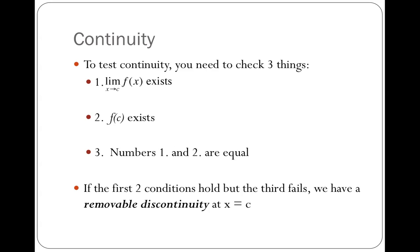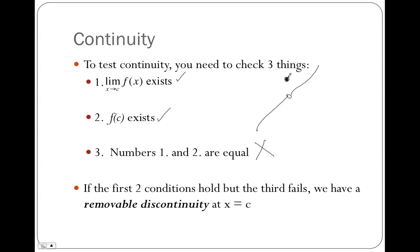If the first two conditions hold but the third fails, then we have what's called a removable discontinuity at x equals c. That's going to look something like a hole in the function, where the function itself is defined at a different point. So condition one is true — the limit exists — f(c) exists, but the third fails. This is a removable discontinuity.